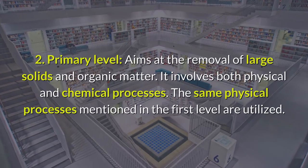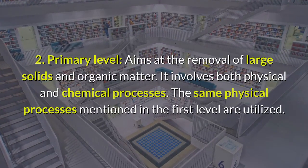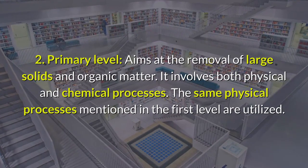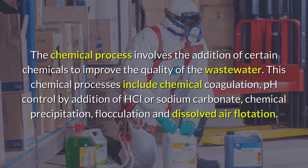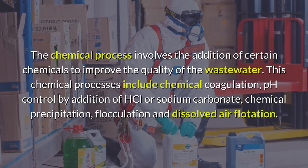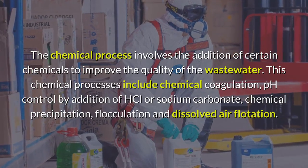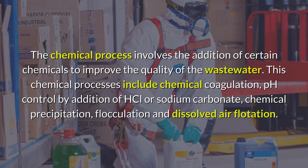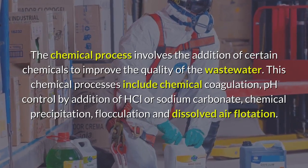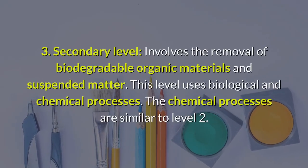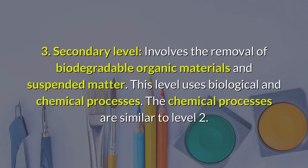The second is the primary level, which aims at the removal of large solids and organic matter. It involves both physical and chemical processes. The physical processes mentioned in the first level are also utilized here. The chemical processes involve the addition of certain chemicals to improve the quality of the wastewater, including chemical coagulation, pH control by addition of HCl or sodium carbonate, chemical precipitation, flocculation, and dissolved air flotation.